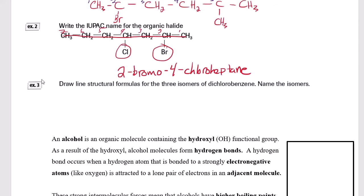And then for example three here, we can do line structural formulas for the three isomers of dichlorobenzene and name the isomers. I'll help you with the first one and then I'll encourage you to pause the video and figure out what the other two are, and then you can check your work against mine. So this has got an aromatic backbone - it's a benzene - so we can draw a benzene ring as my parent chain.